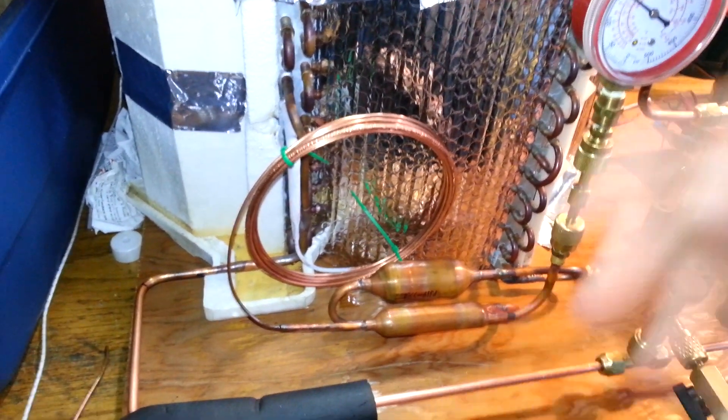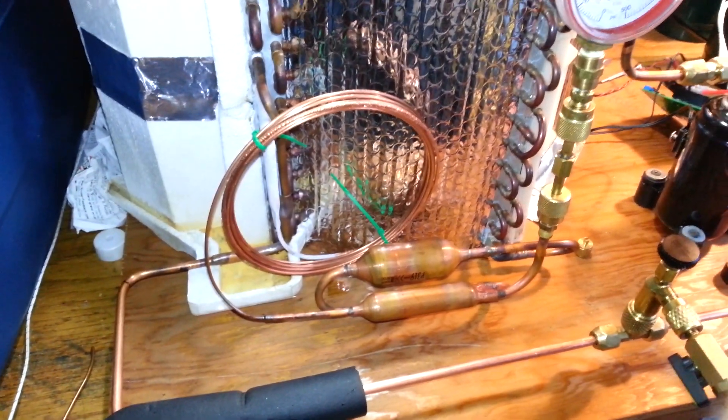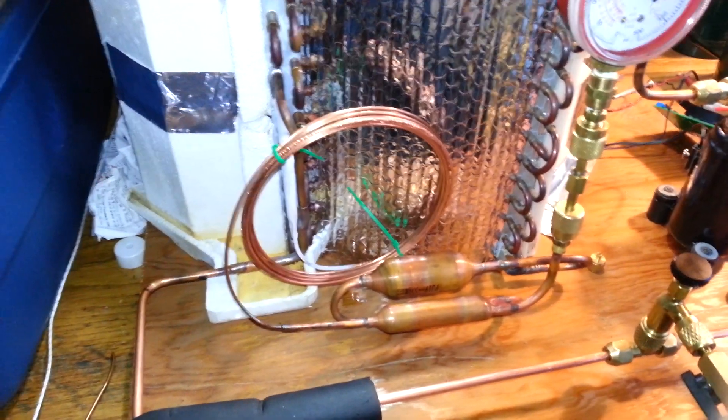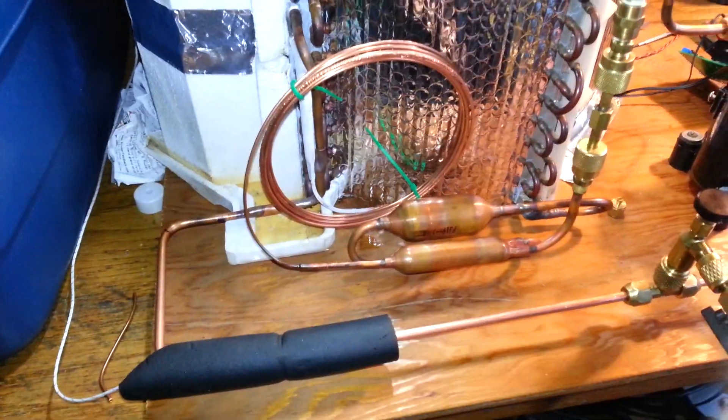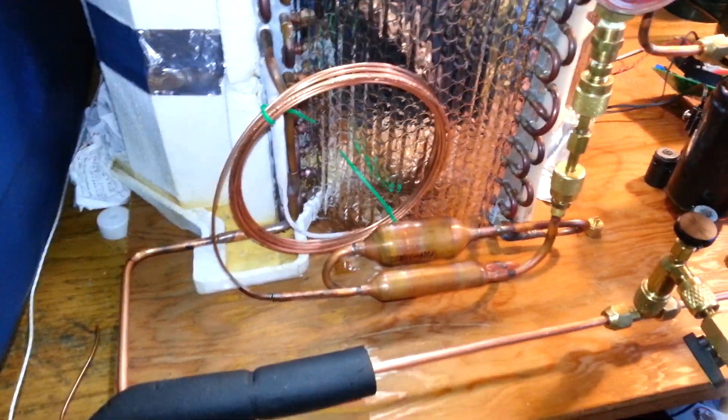I haven't decided how much, probably somewhere between six inches to a foot, because I think I need to remove a fair amount. I might just go with a foot and then re-braze it in while I'm nitrogen purging, of course.